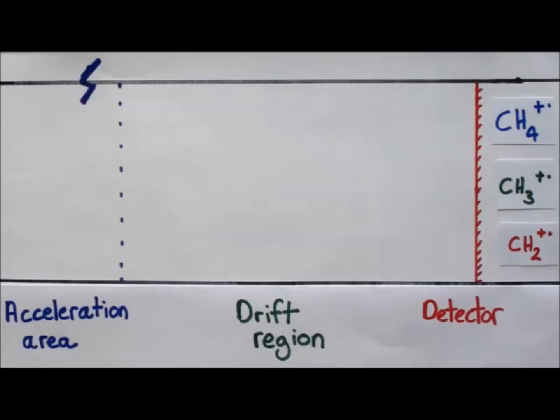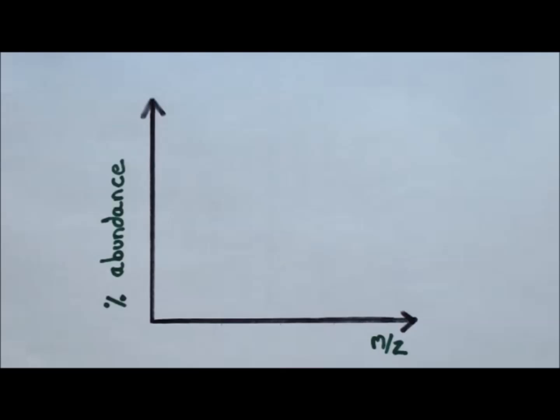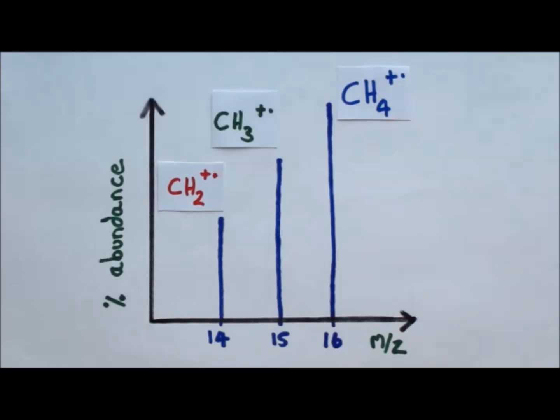This information is then displayed graphically, with the mass to charge ratio on the x-axis, and percentage abundance on the y-axis. The most abundant fragment is set to 100%, and the other peaks are leveled against this. In this case the parent ion is the most abundant, but this is not always the case.